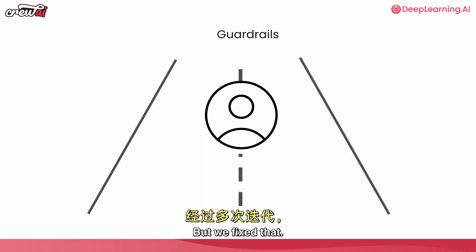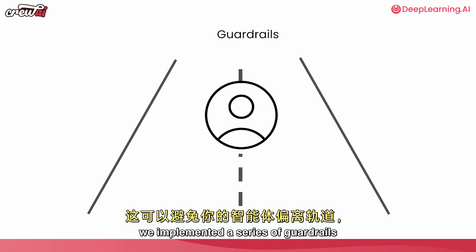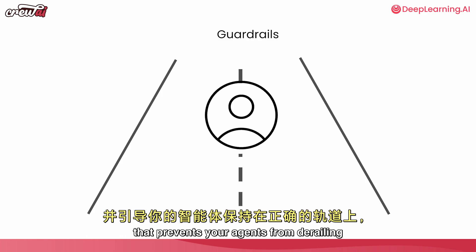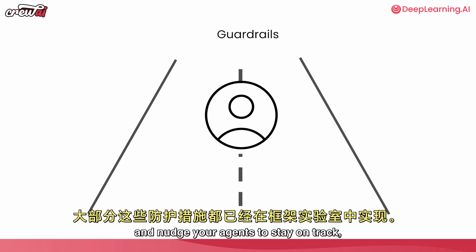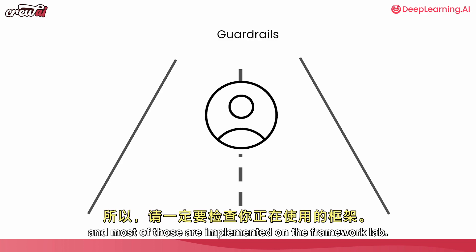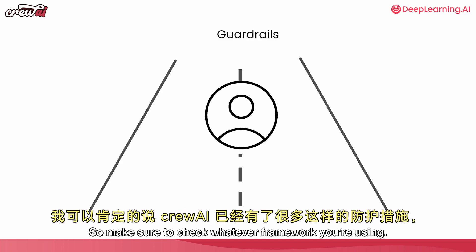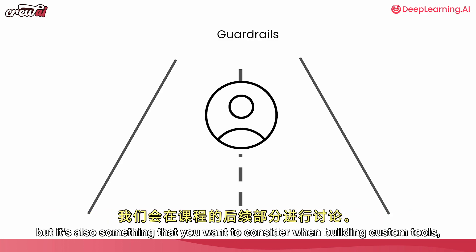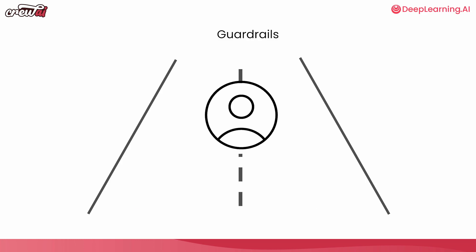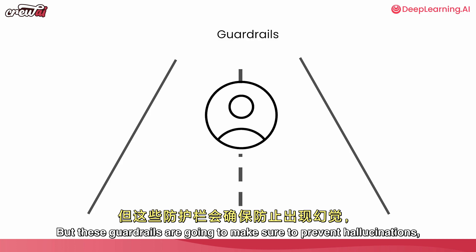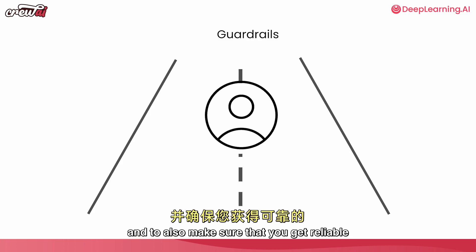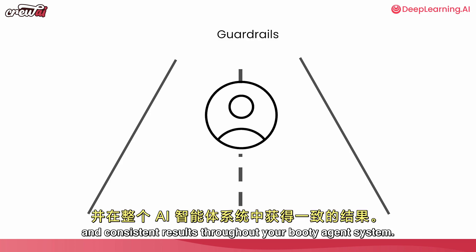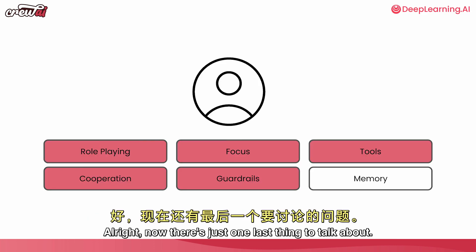Agents would get stuck trying to use the same tool over and over again, especially when using open-source small models. We fixed that through many iterations by implementing a series of guardrails that prevent your agents from derailing and nudge them to stay on track. Most of those are implemented at the framework level, so check whatever framework you're using. These guardrails will prevent hallucinations and ensure you get reliable and consistent results throughout your multi-agent systems.